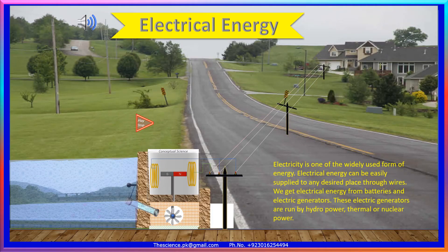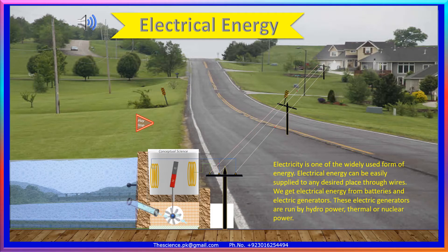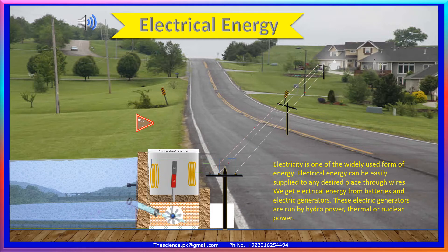Electricity is one of the most widely used forms of energy. Electrical energy can be easily supplied to any desired place through wires. We get electrical energy from batteries and electric generators, which are run by hydropower, thermal, or nuclear power.